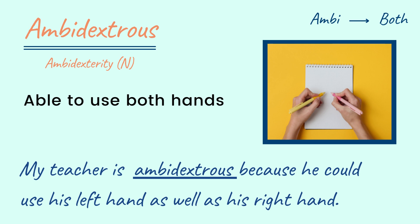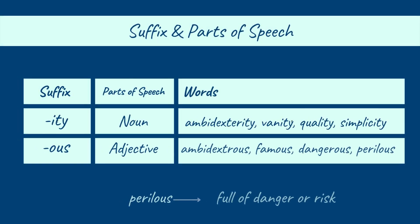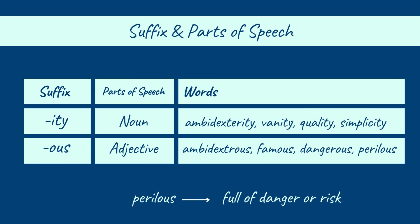For example: my teacher is ambidextrous because he could use his left hand as well as his right hand. Looking at the examples that we learned, it can be seen that the suffix -ity is being used for making the noun form.